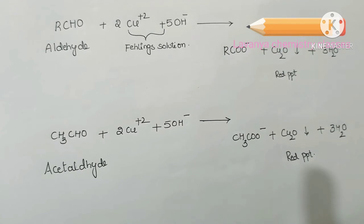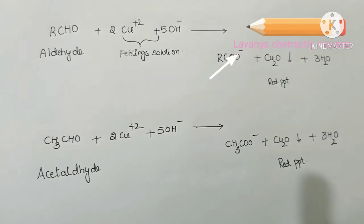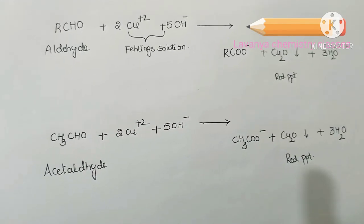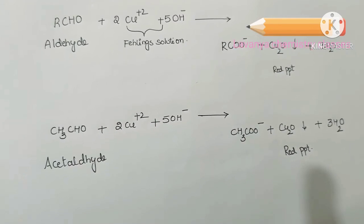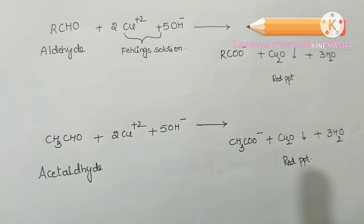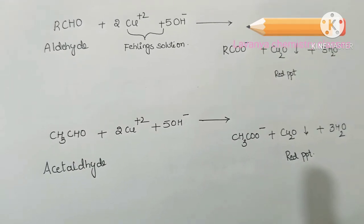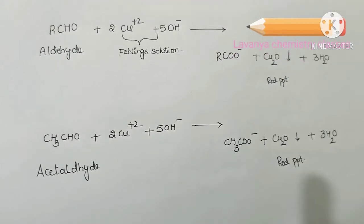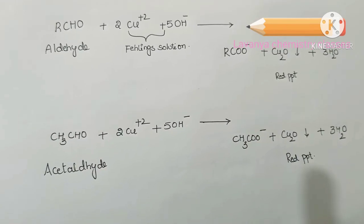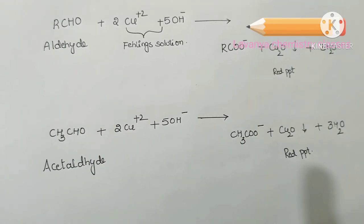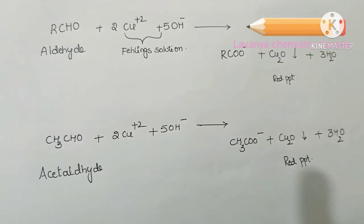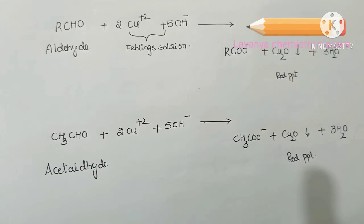The red color precipitate indicates cuprous oxide (Cu₂O). The reaction is: RCHO + 2Cu²⁺ + 5OH⁻ → RCOO⁻ + Cu₂O precipitate + some water molecules. The downward arrow indicates that the cuprous oxide forms as a red color precipitate.